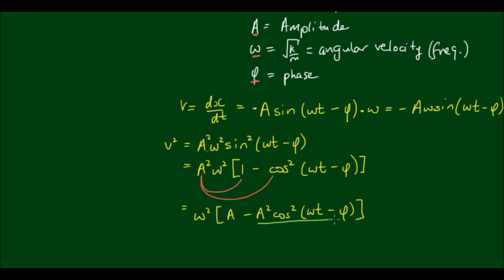And we can see that this term is equal to the displacement squared. So I can write V squared is equal to omega squared outside of A squared—sorry, this should be squared—minus x squared.